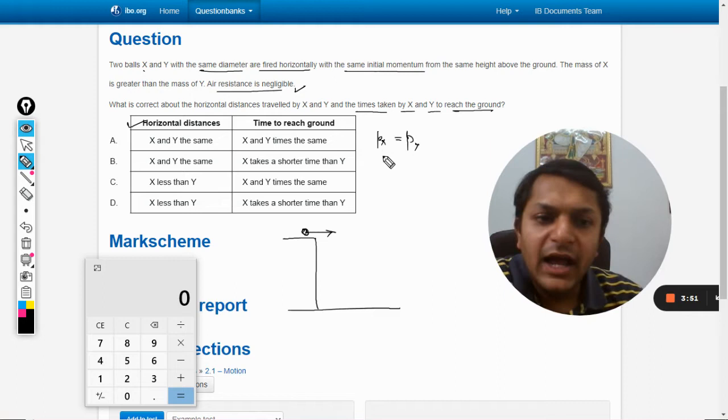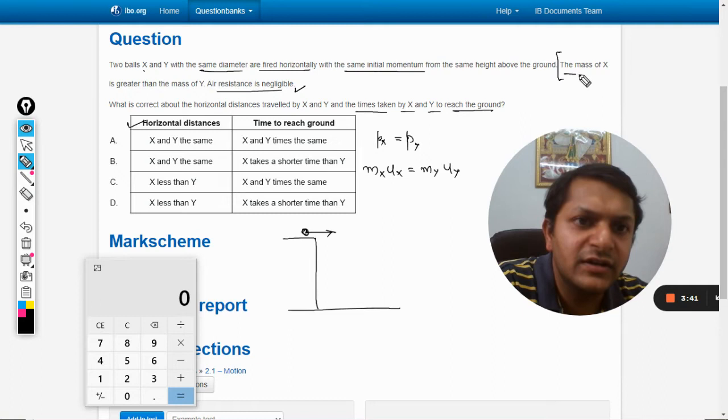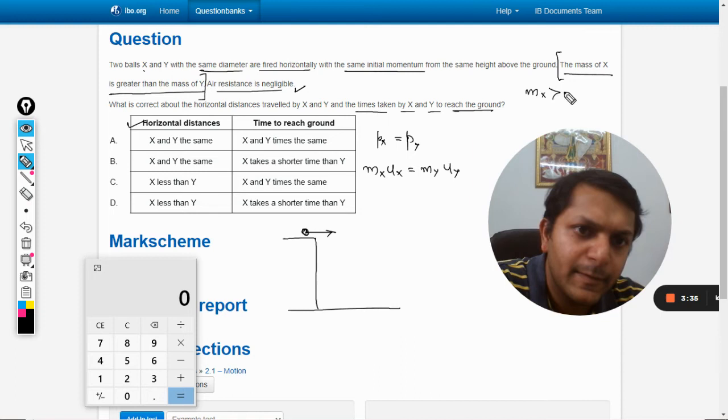What is given to us is that the momentum of X is equal to momentum of Y, and by momentum we mean the product of mass and velocity.